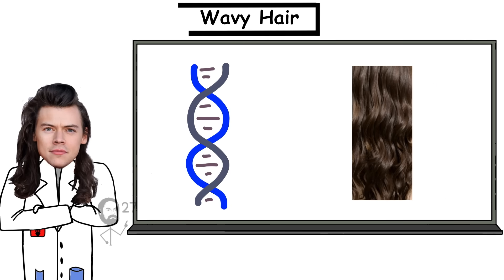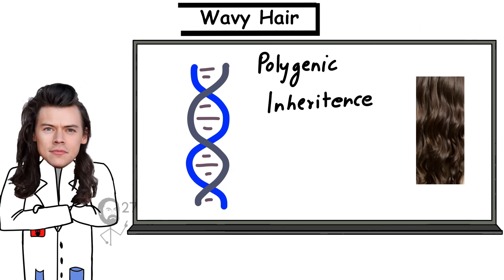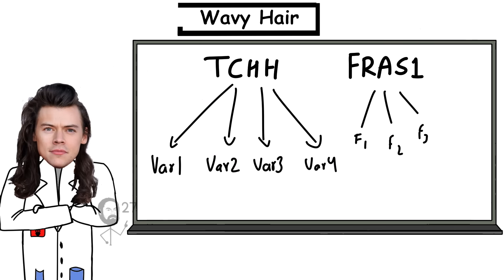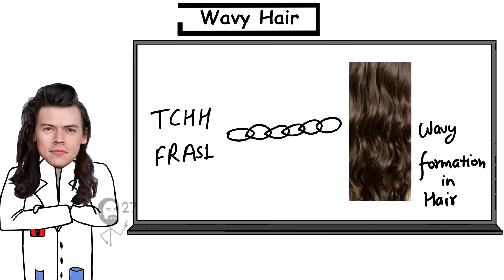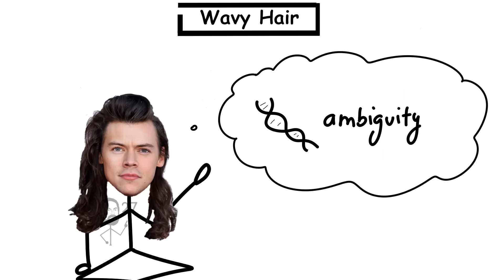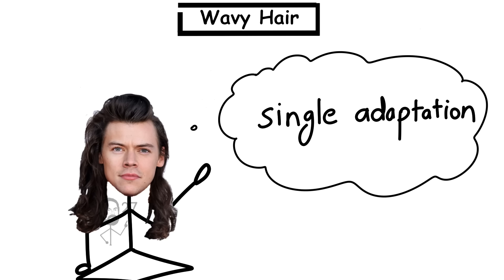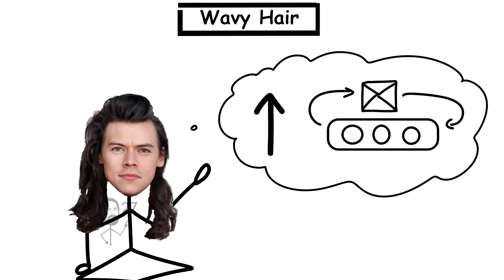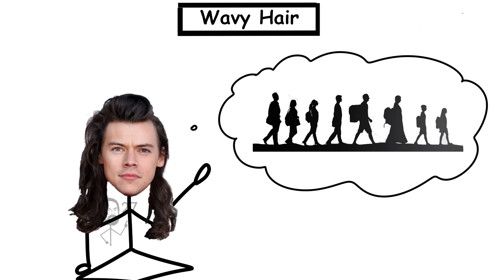Unlike the clearly dominant genes behind coily or straight hair, the genetics of wavy hair involve polygenic inheritance—multiple genes interacting to produce the final texture. Variants in the TCHH and FRAS1 genes, among others, have been linked to wave formation, but expression varies widely even within families. This genetic ambiguity suggests that wavy hair is less the result of a single adaptation and more of a byproduct of genetic recombination during human dispersal.